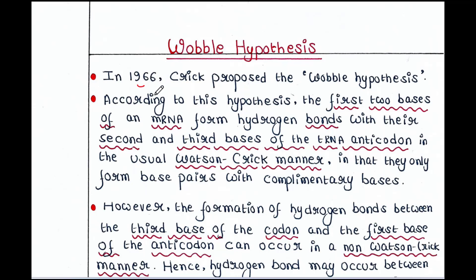So in 1966, Crick proposed this Wobble Hypothesis. Do you know the meaning of wobble? Wobble means it's flexible. So it is actually about the genetic code.